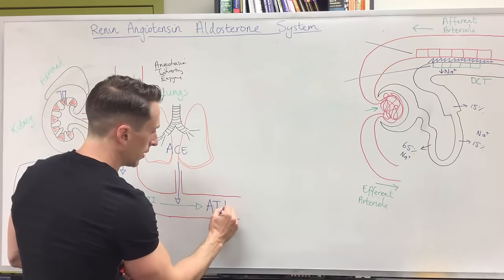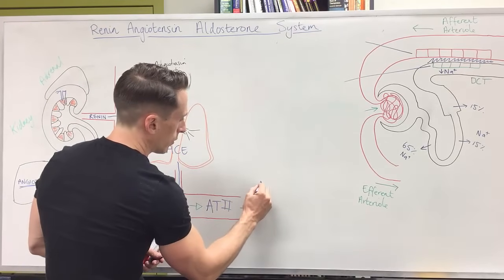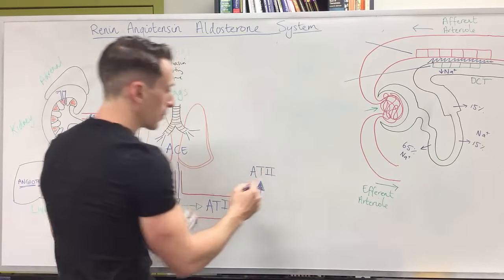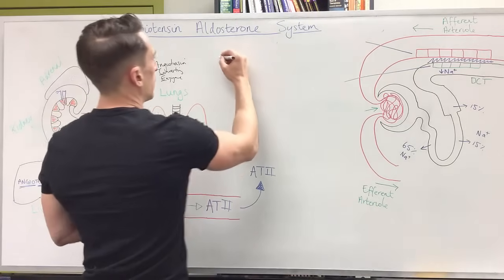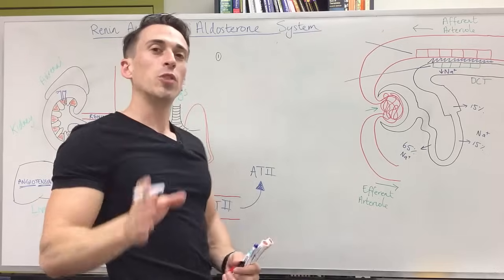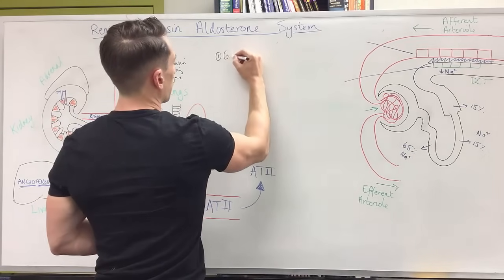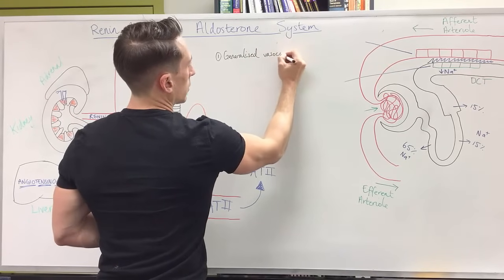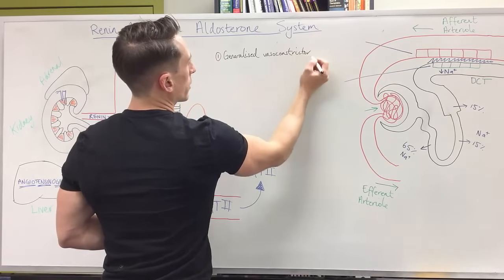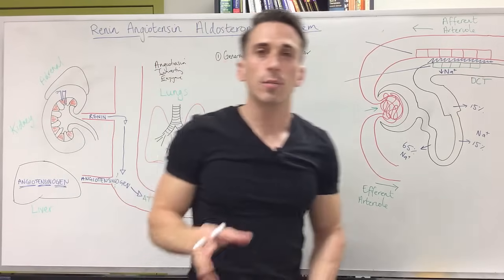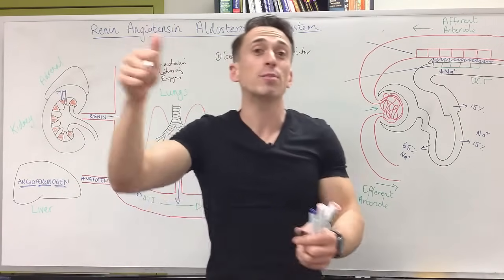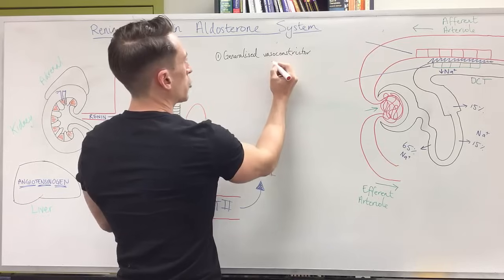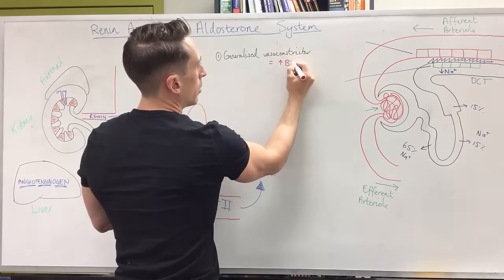Angiotensin-2 is what we're interested in. The first thing it does is act as a generalized vasoconstrictor, predominantly constricting arterioles. This causes blood to back up and increase blood pressure. So the ultimate outcome of this generalized vasoconstriction is an increase in blood pressure.